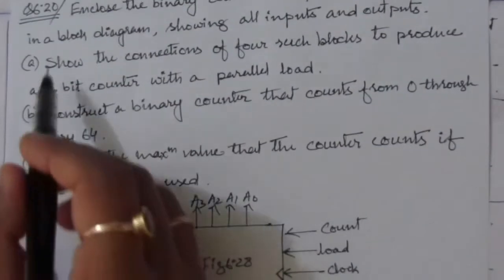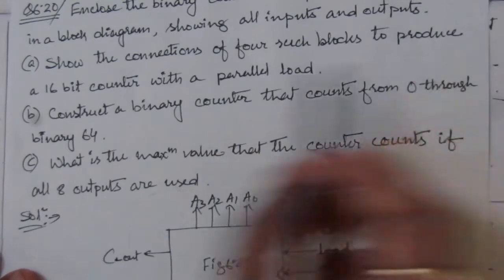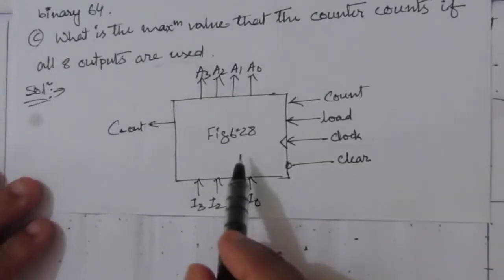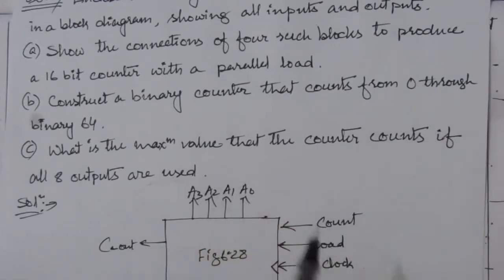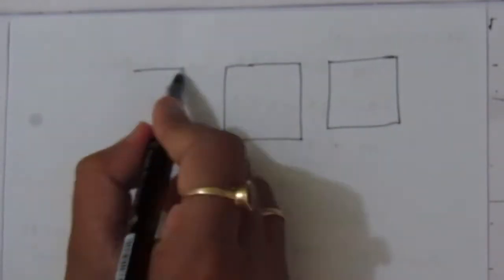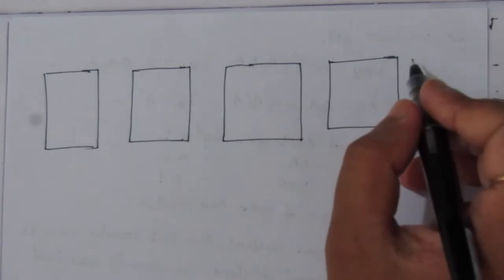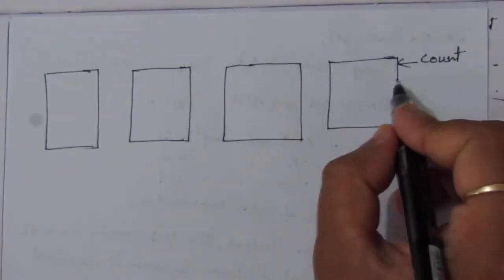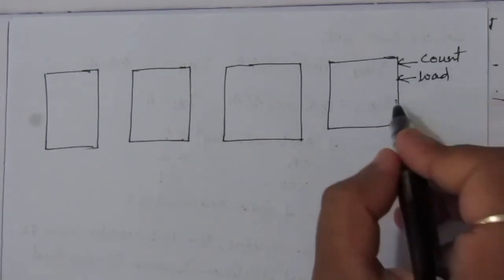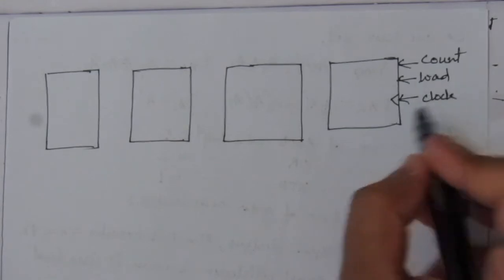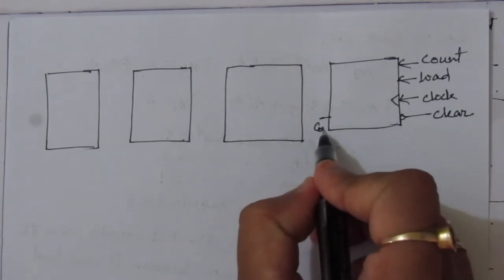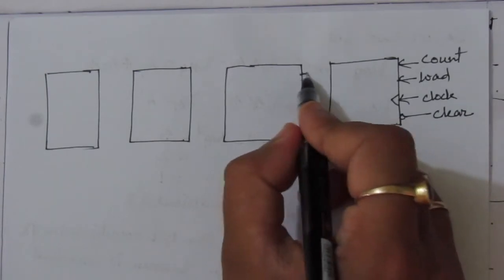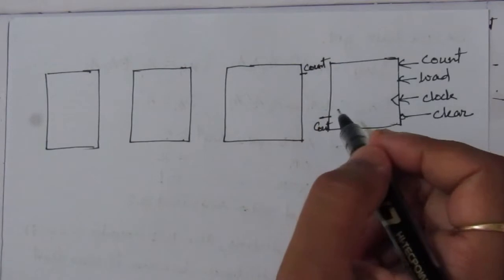In the first part of the problem, we show the connections of four such blocks to produce a 16-bit counter. Here we have a 4-bit counter that counts from 0 to 15. Now we have to design a 16-bit counter with 16 parallel inputs and 16 parallel outputs, so we use four such counter blocks. Each block has count, load, clock, and clear inputs, and one carry-out. This carry-out is connected to the count-in of the next higher-order counter.